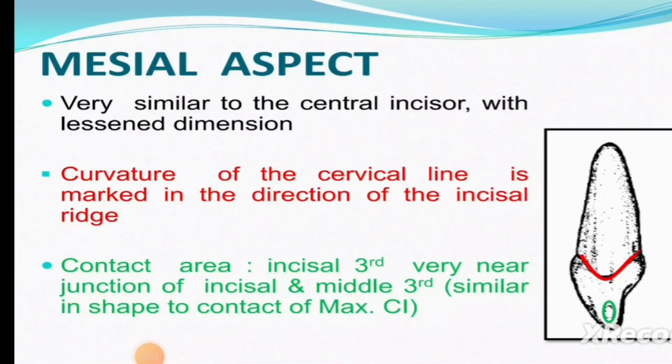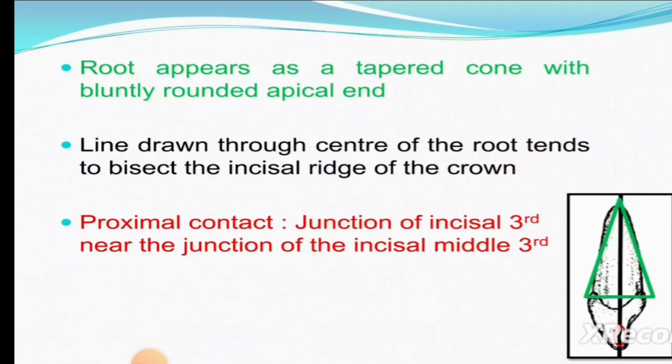For the mesial aspect, this is very similar to the central incisor with lesser dimensions. The curvature of the cervical line is in the direction of the incisal ridge, just as in the central incisor. The contact area is at the junction of the incisal third and middle one-third, similar in shape to the contact of the maxillary central incisor. The root tapers with a bluntly rounded apex.